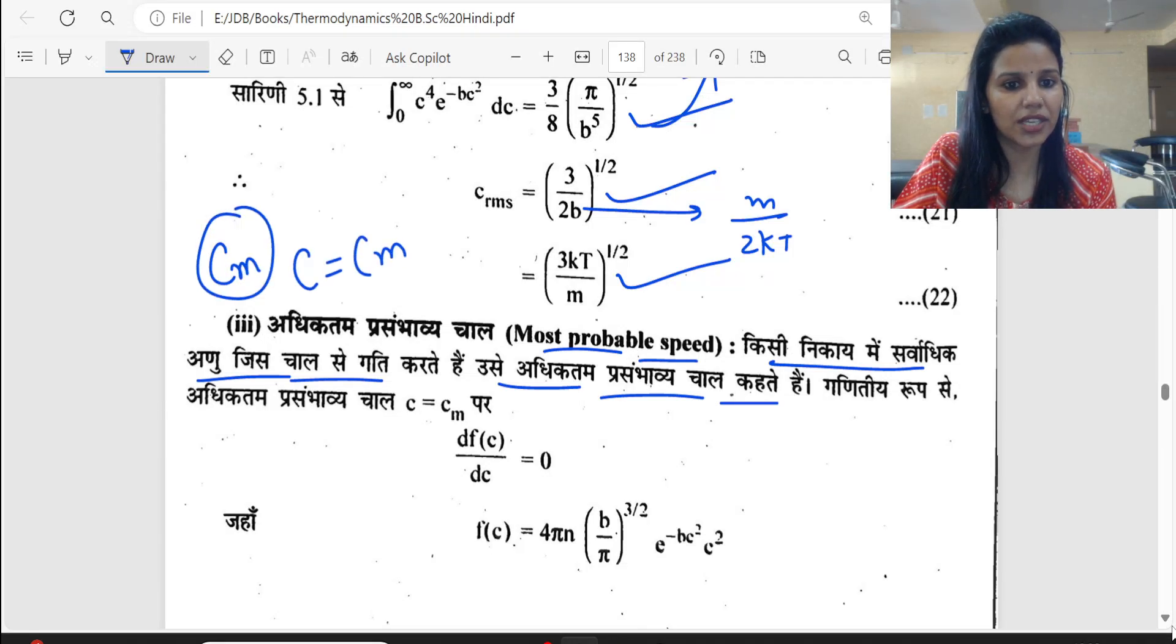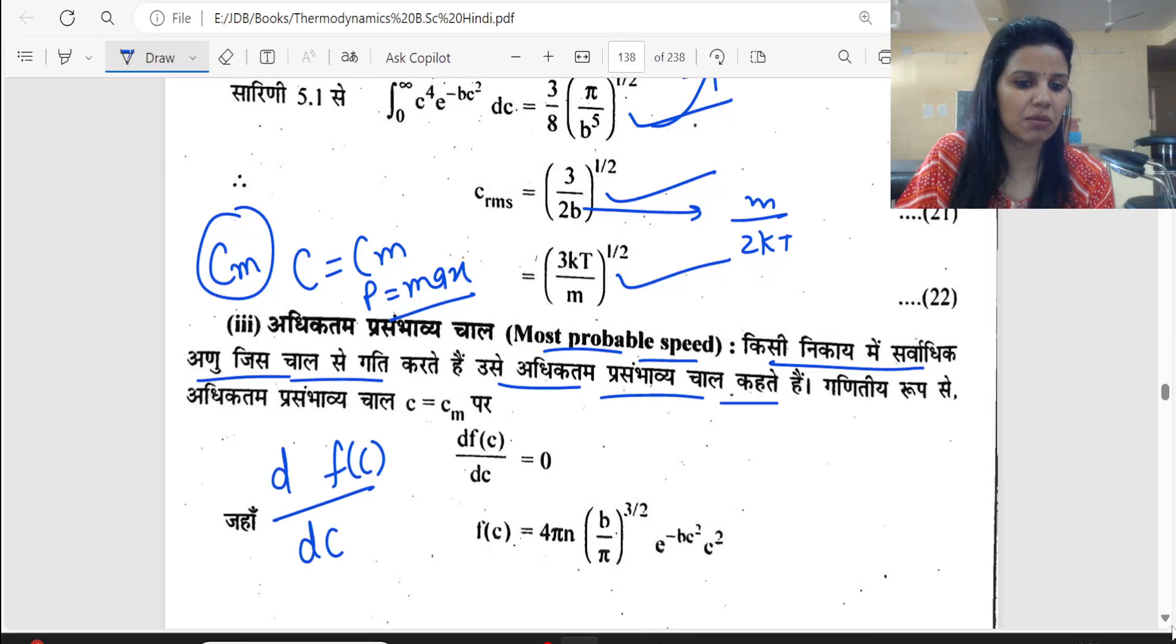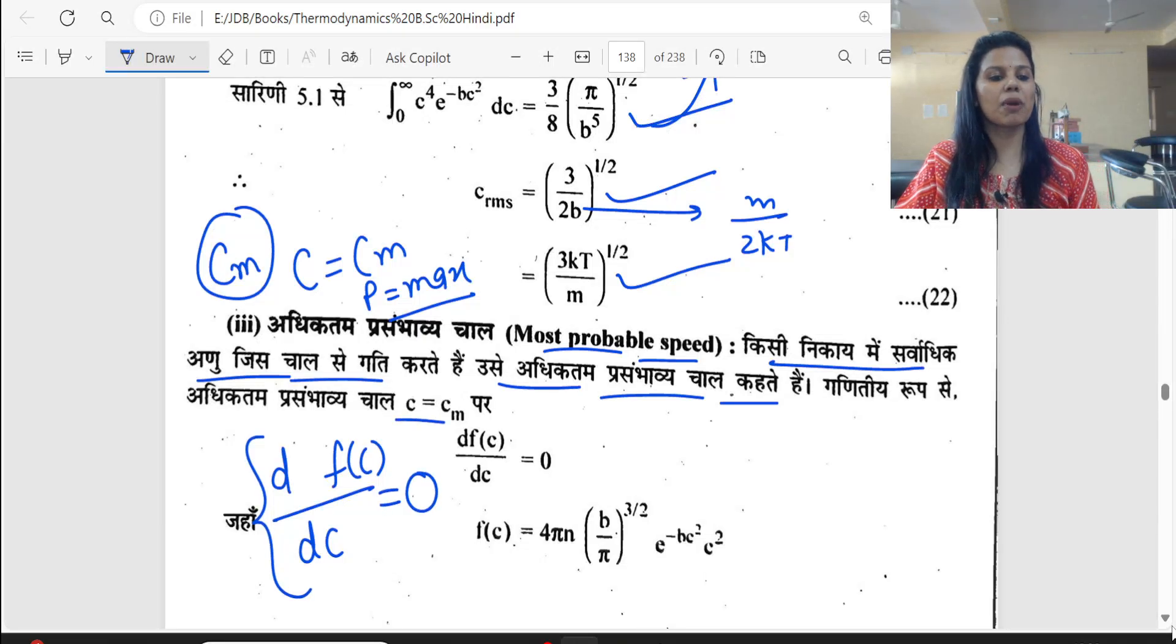This means the maximum probability. If it is represented by Cm, then when C equals Cm, the probability is maximum. The probability Fc is maximum, so the first derivative must be zero.